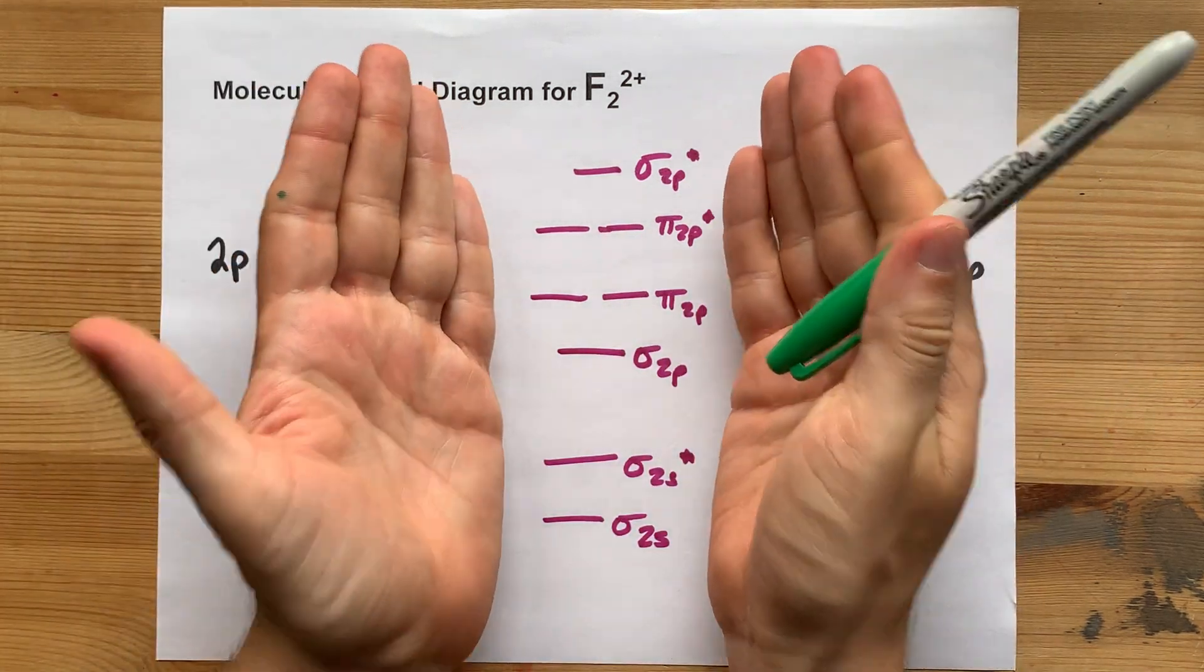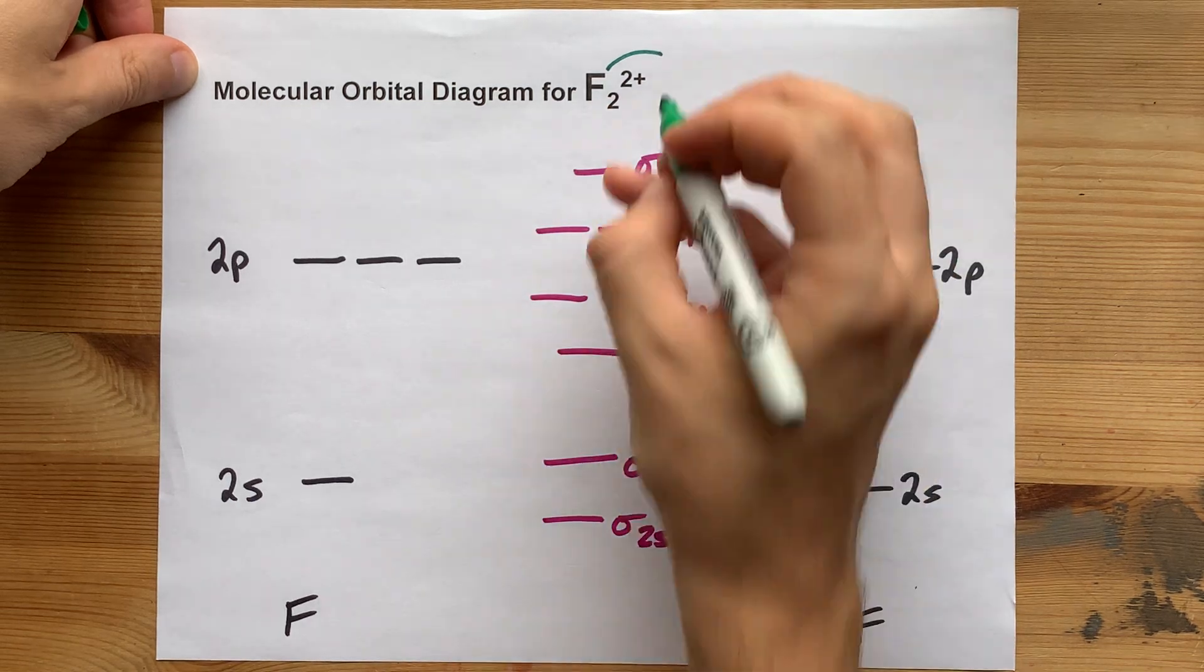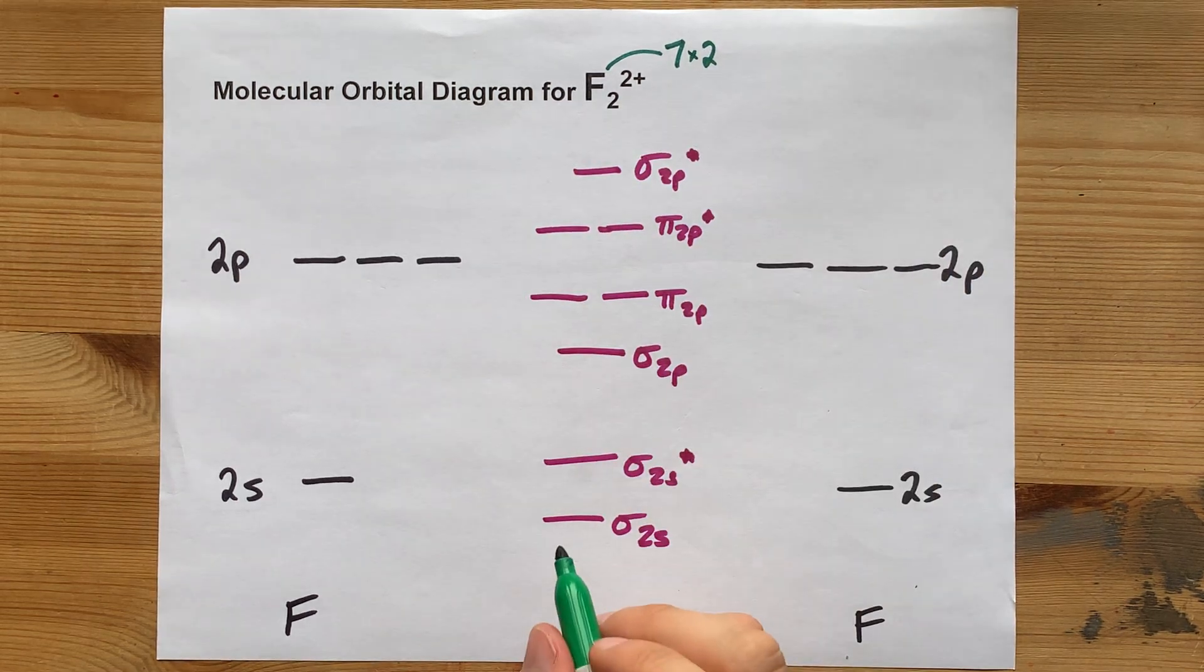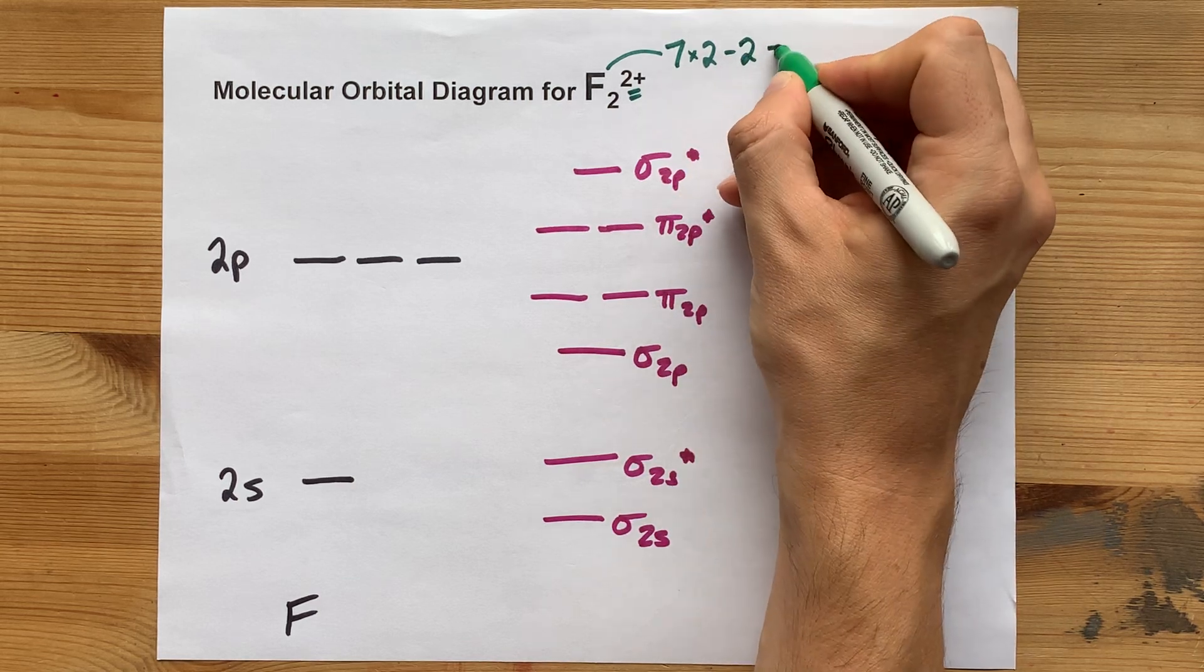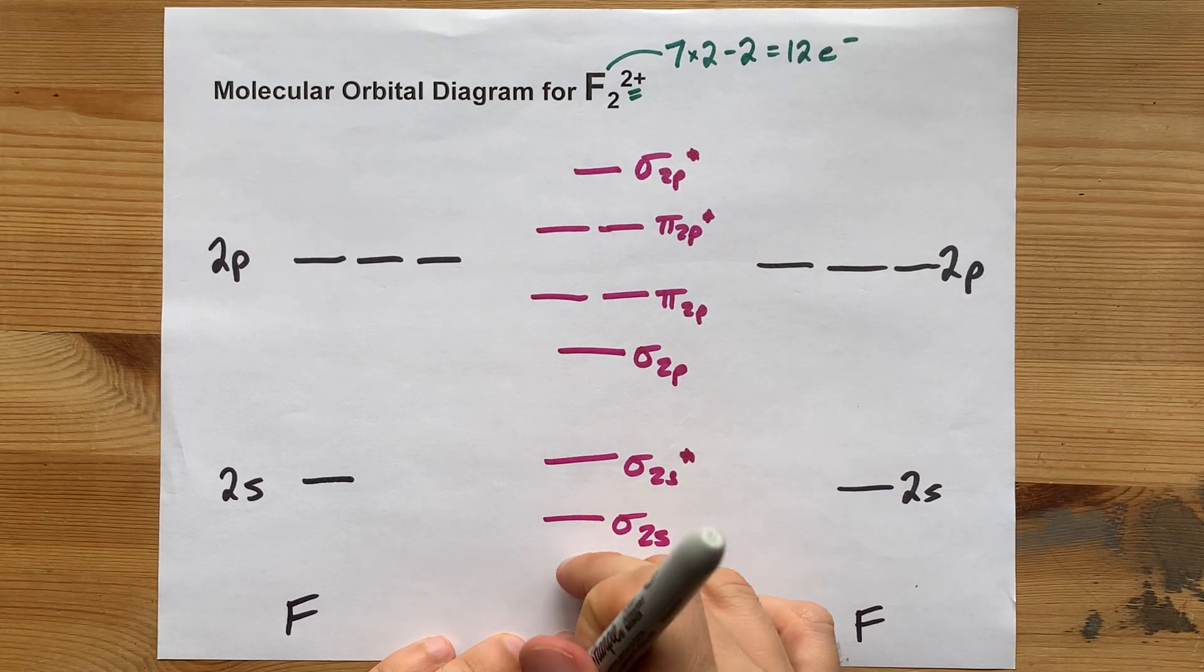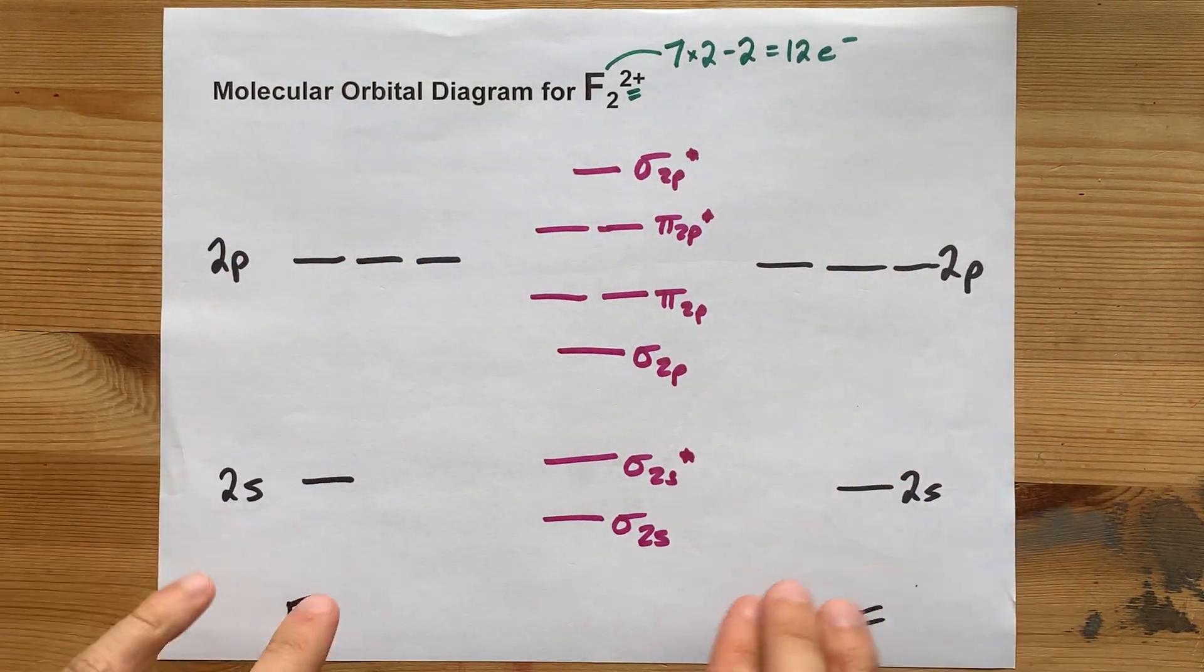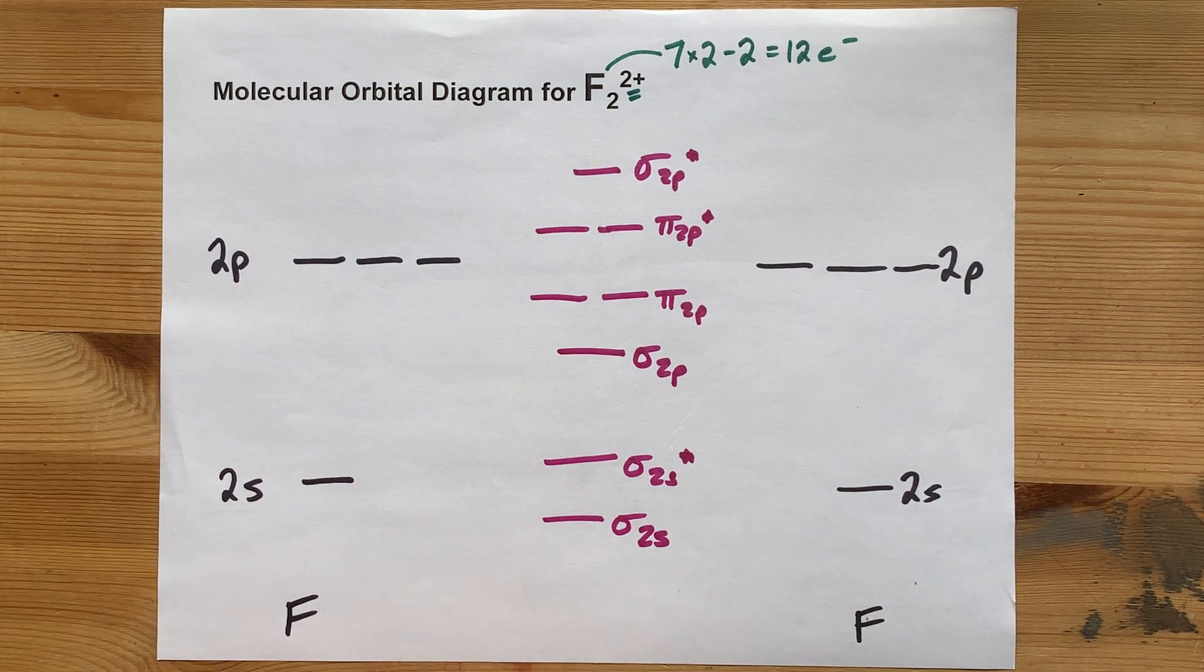What you came for is this diagram: F2 2+. Fluorine brings seven valence electrons each, and so I need to double it since there are two of them. And this plus two charge means that I've actually lost two extra electrons. That gives me 12 electrons total for this valence shell molecular orbital diagram. I know fluorine has nine electrons total, but again, there's a 1s that I haven't shown here.